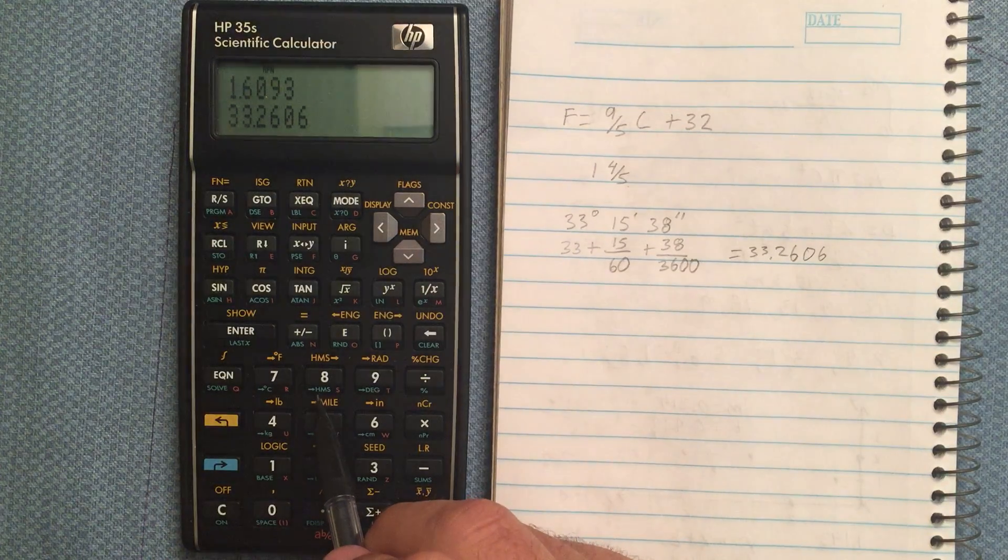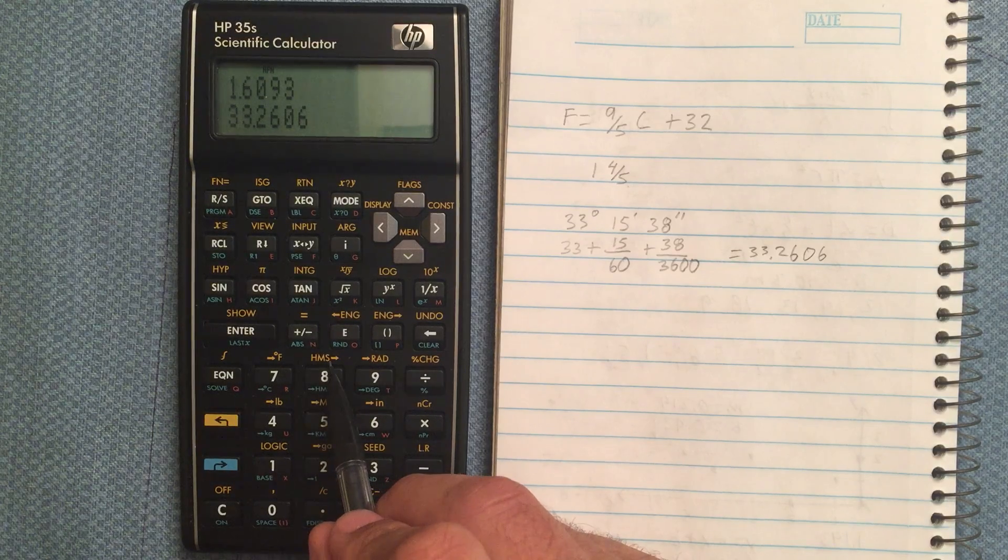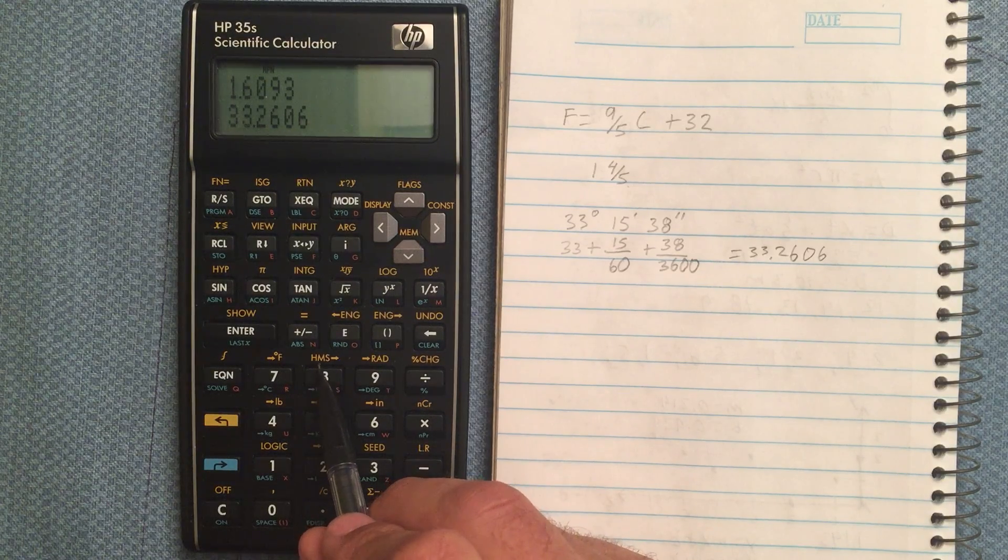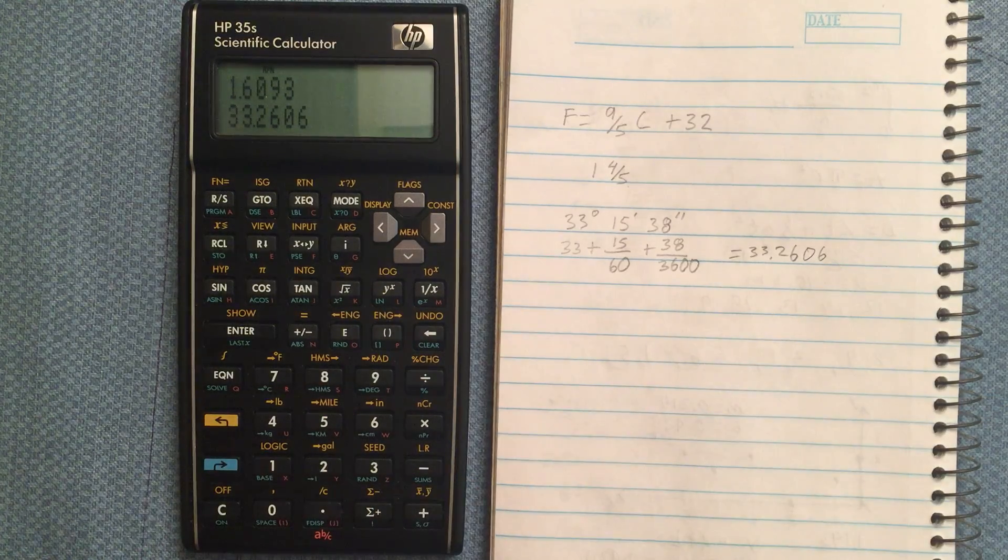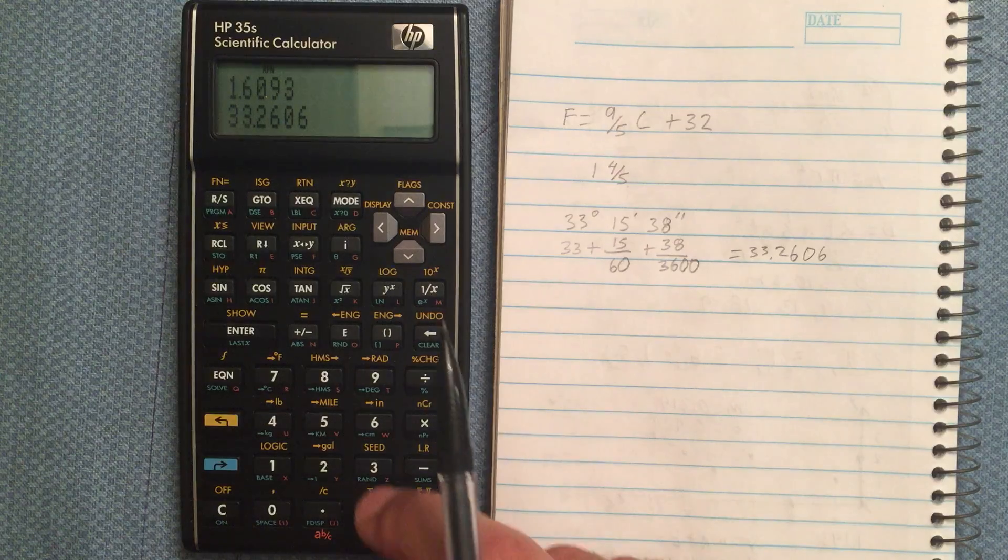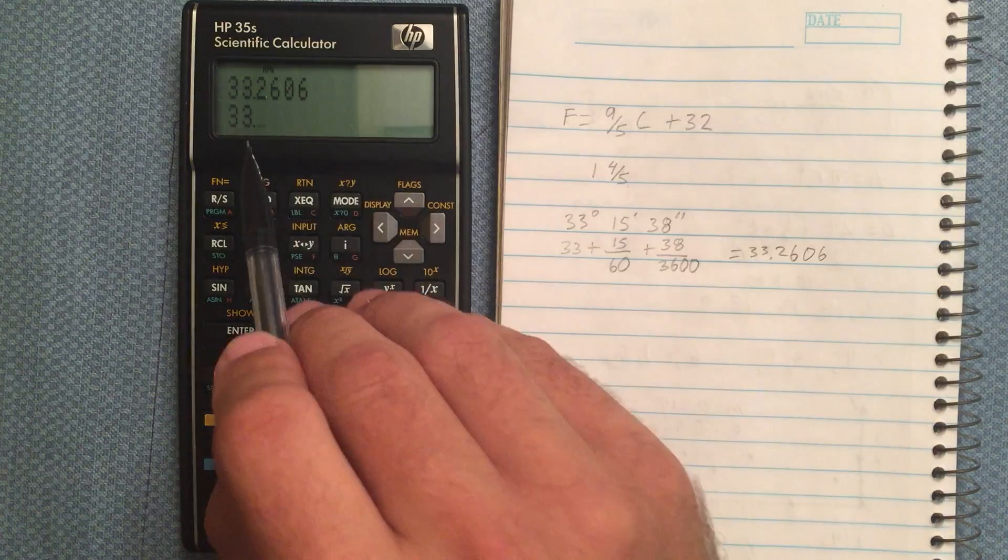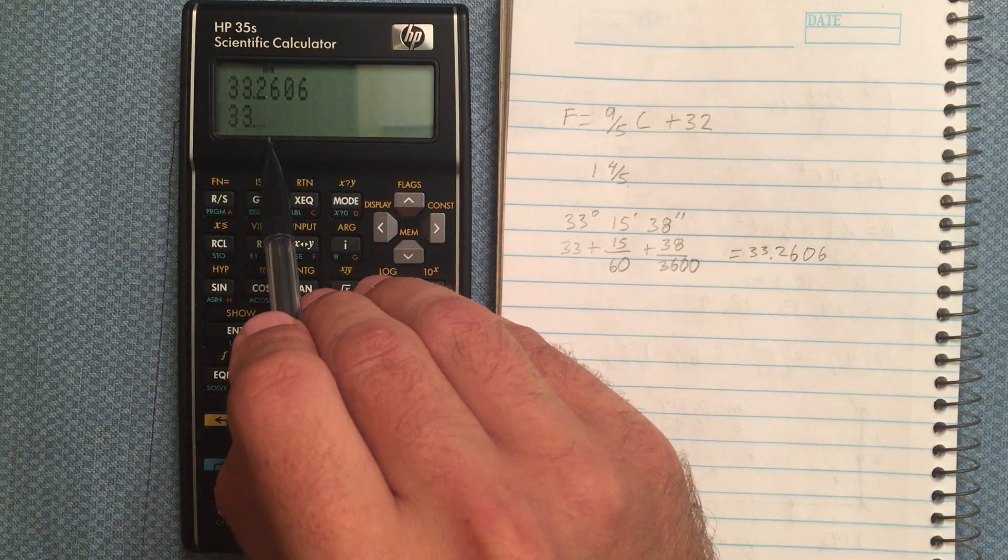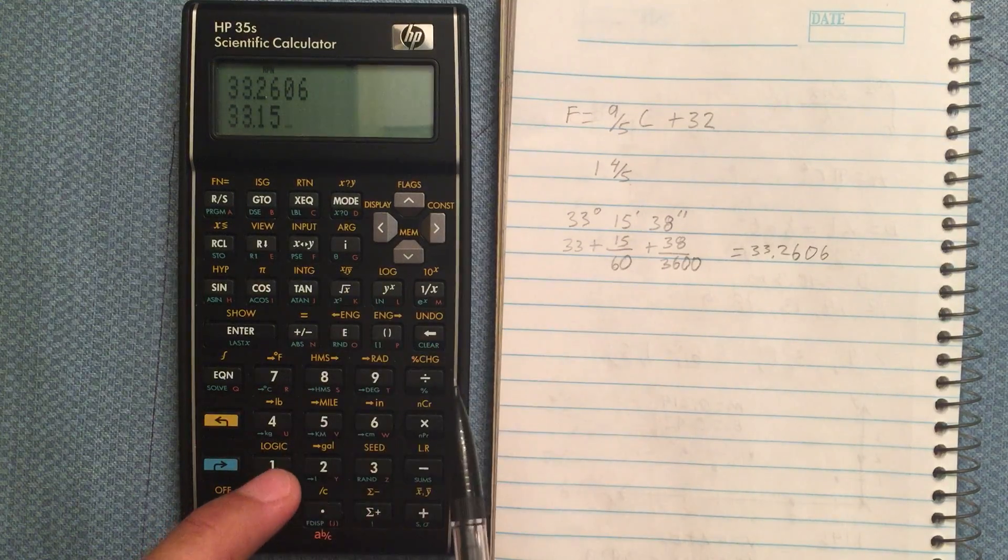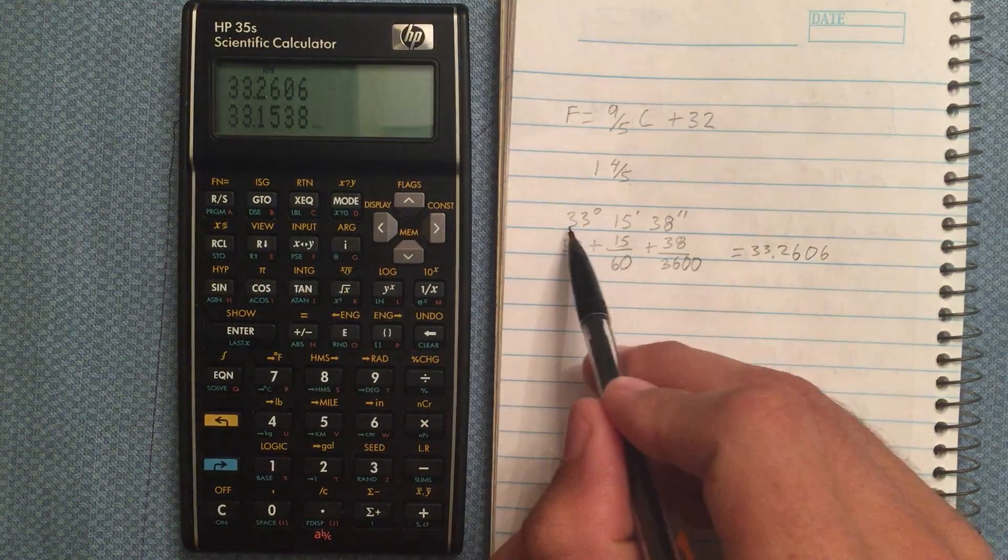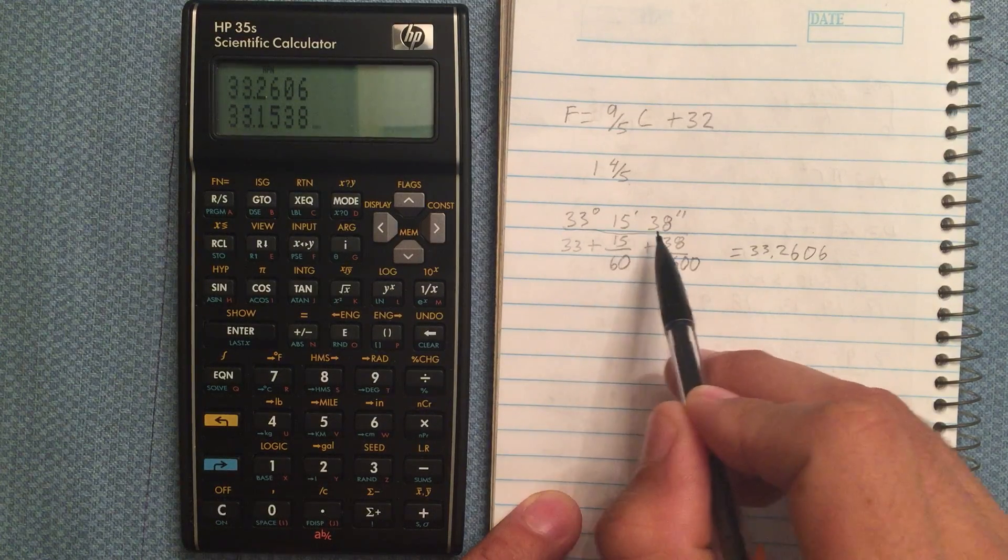Now, I can do it using this button as well, where it goes from hours, minutes, seconds, or it could be degrees, minutes, seconds, to a decimal form. So, let's enter in that 33, and then it accepts the next two values as your minutes, and then the next two values as your seconds. So, 15, 38 is what we entered right here. 33.1538.